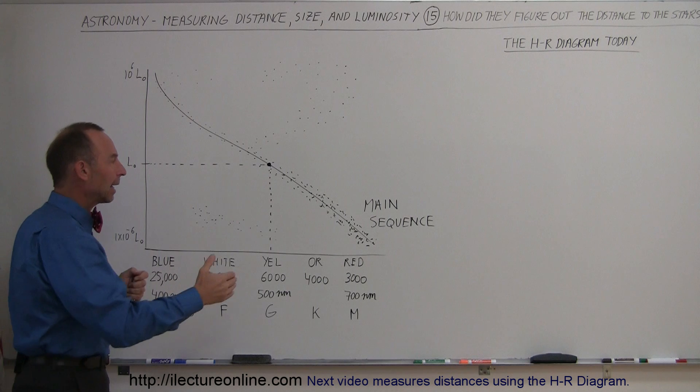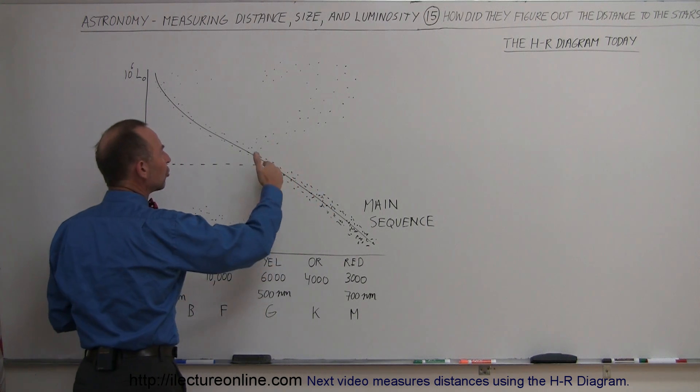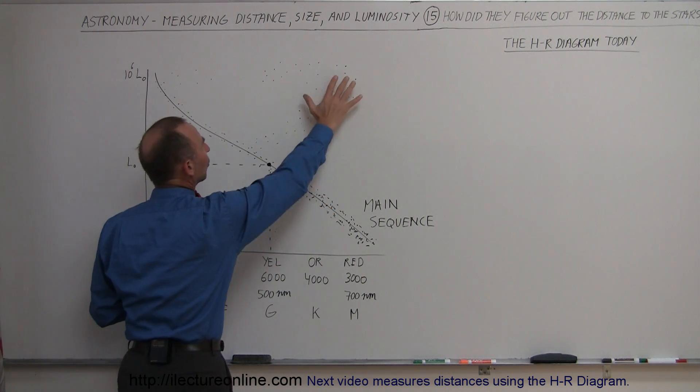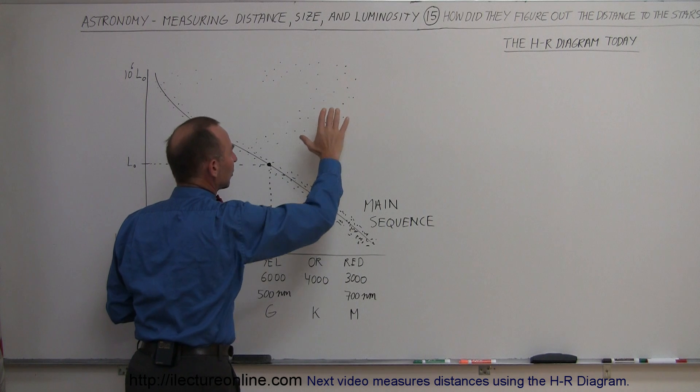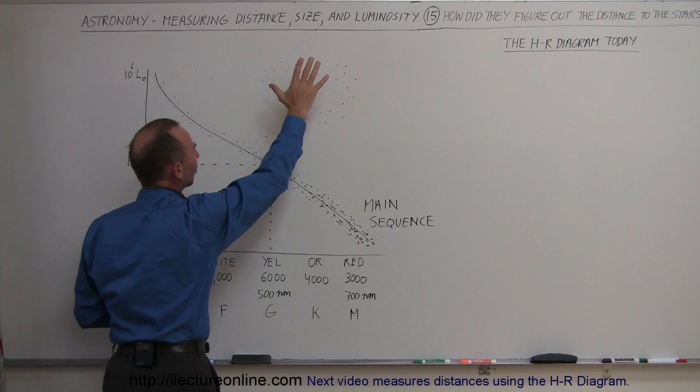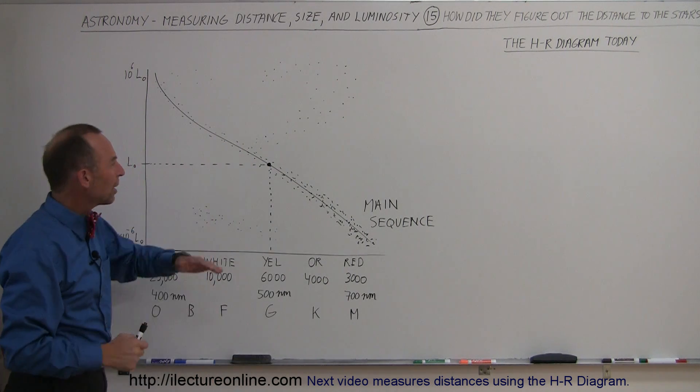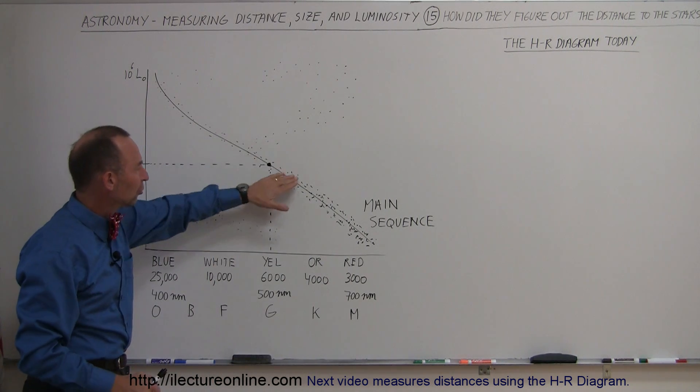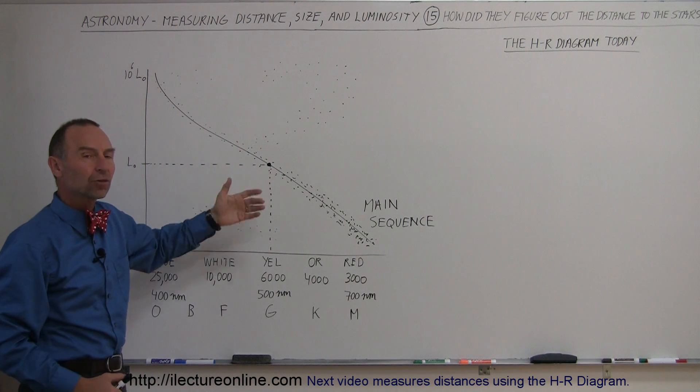Then we've discovered that these stars then at some point begin to change. Now notice these dots over here. What do they represent up here? Well, notice they tend to be orange or red in color and they're extremely luminous. That means they're cool on the surface, yet way, way brighter than the stars in this region right here, which have a much hotter surface.